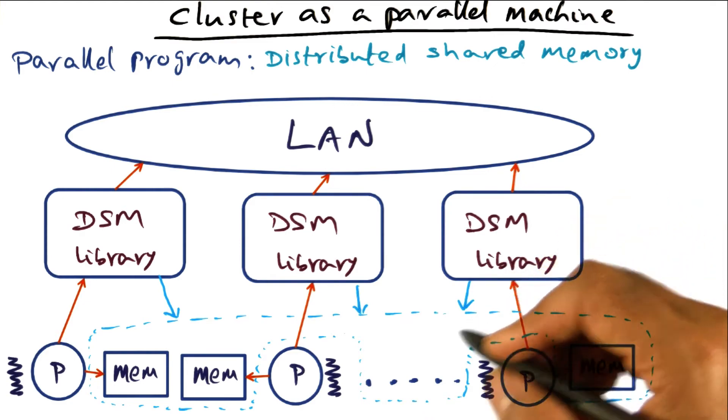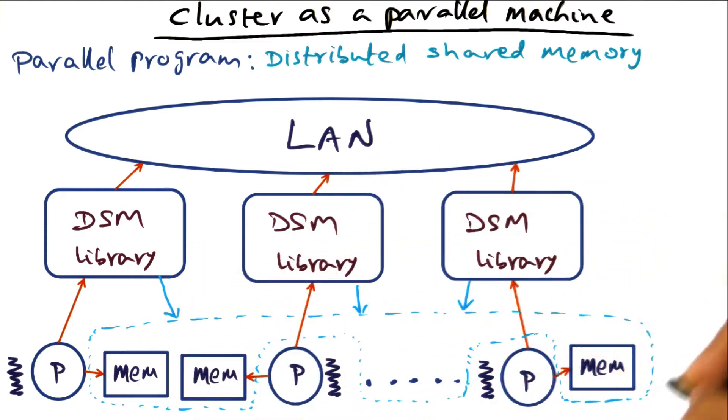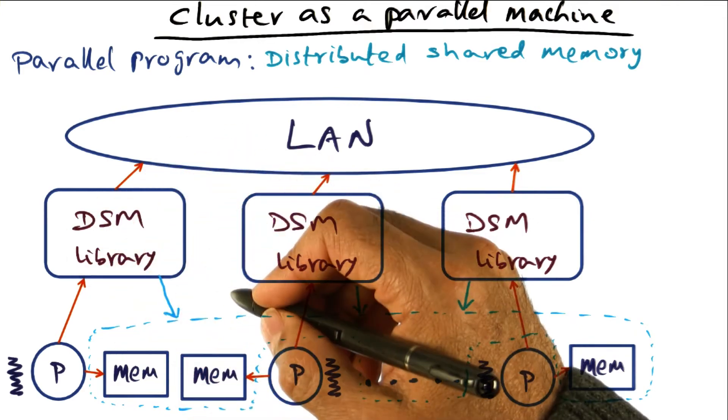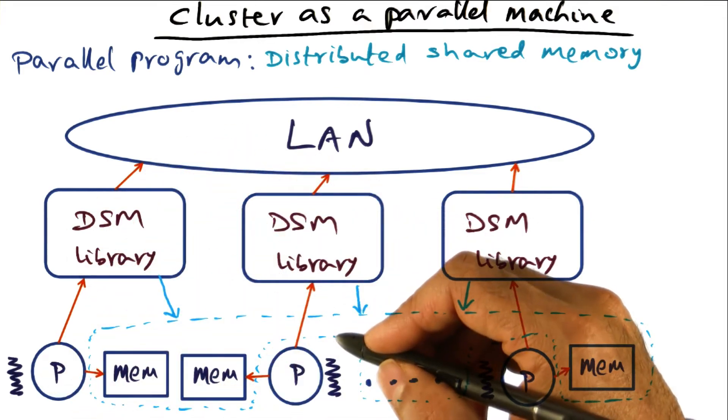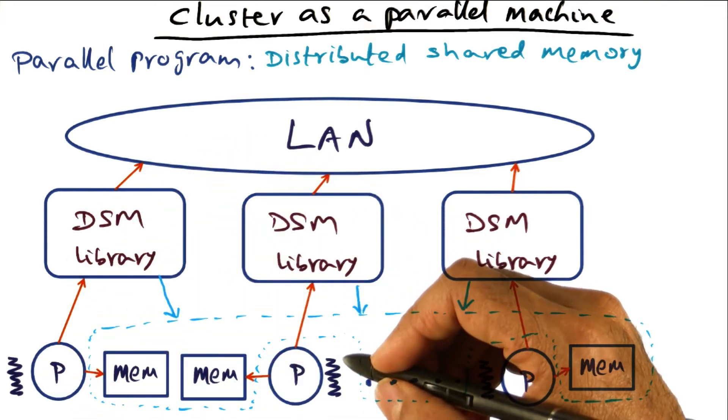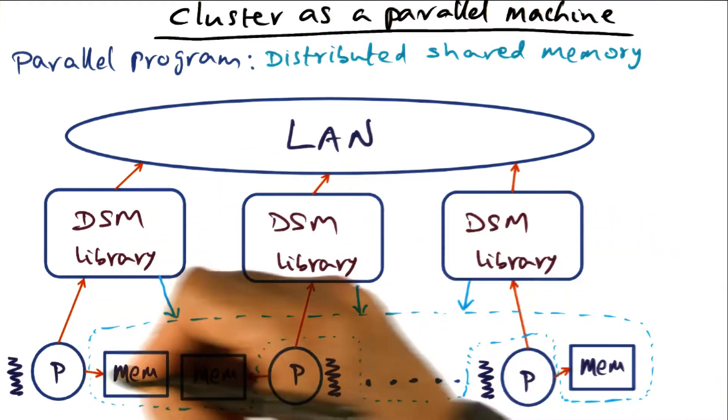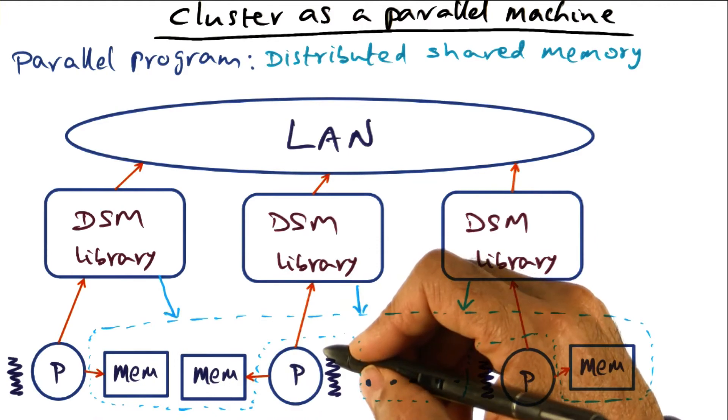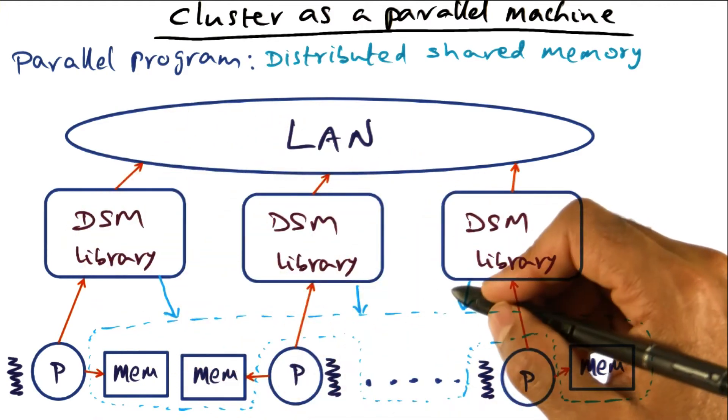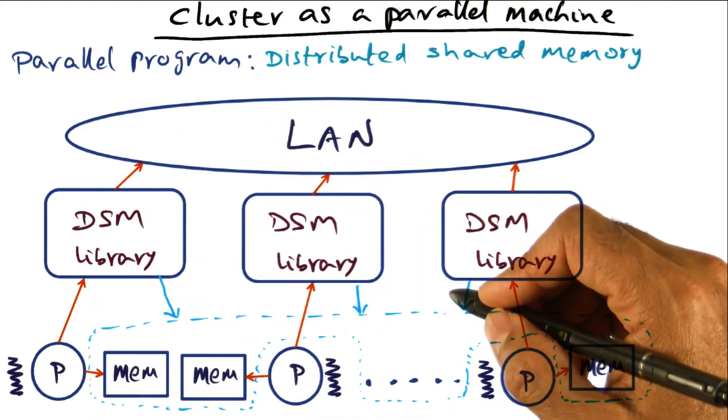Also, since we are providing shared memory semantics in the DSM library for the application program, there is no need for marshaling and unmarshaling arguments being passed from one processor to another. All of that is handled by the shared memory.